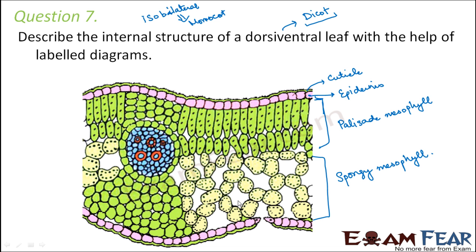The lower mesophyll is the spongy parenchyma, which has lots of open spaces and air cavities for gas storage. Photosynthesis takes place in the palisade mesophyll because chloroplasts are present in this layer. The vascular tissues are present with xylem surrounded by phloem, and sclerenchymatous bundle sheaths are also present. This is how the internal structure of a dorsiventral leaf looks.